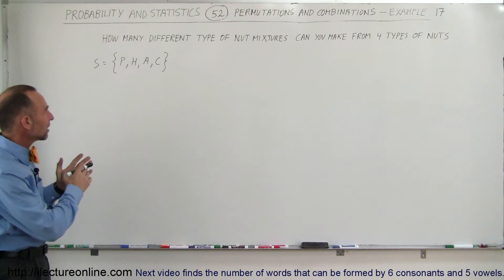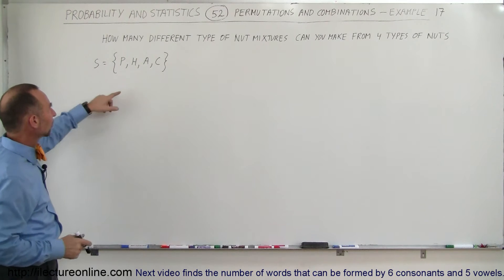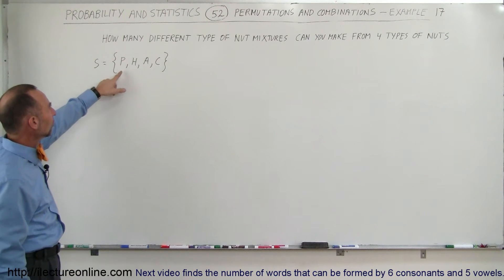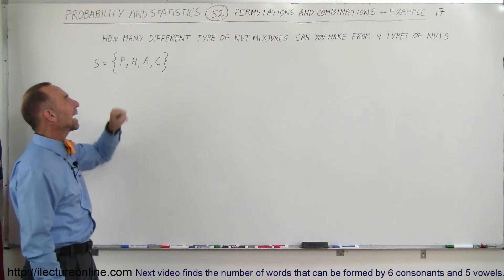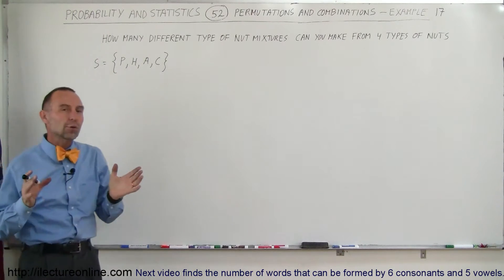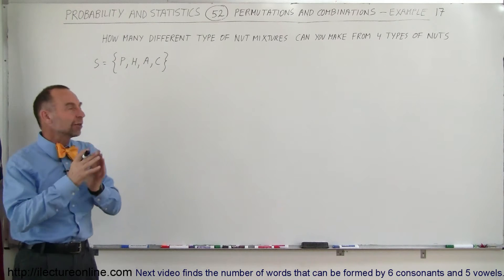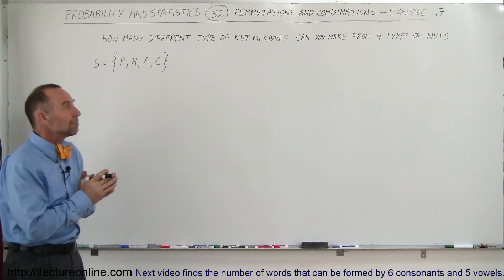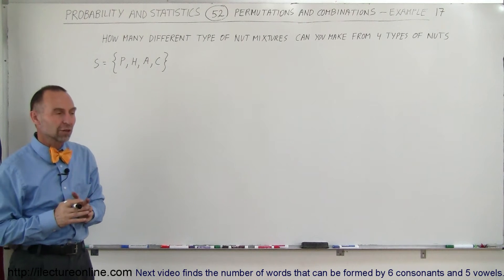We have a sample space of four different kinds of nuts: peanuts, hazelnuts, almonds, and cashews. We want to know how many different types of nut mixtures we can make from those four types of nuts.